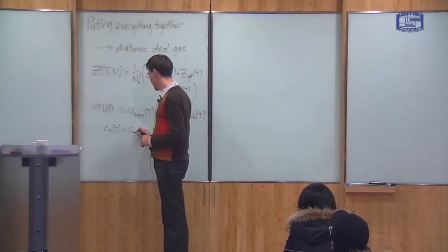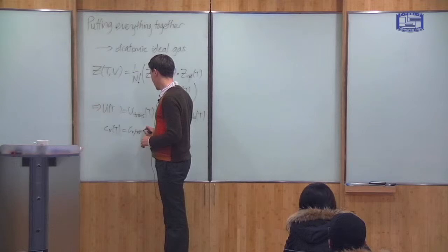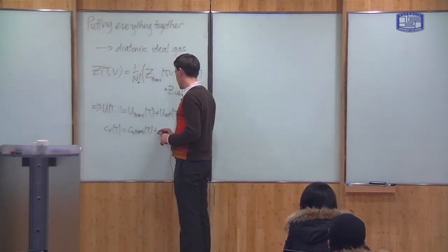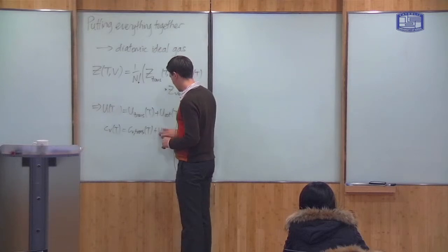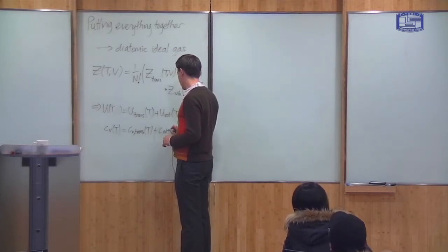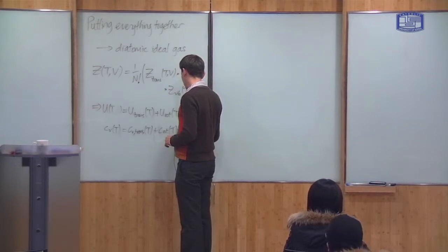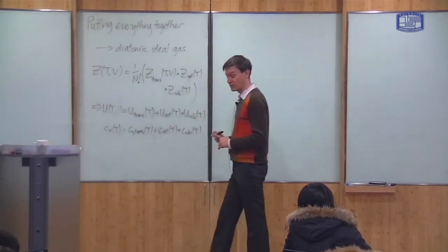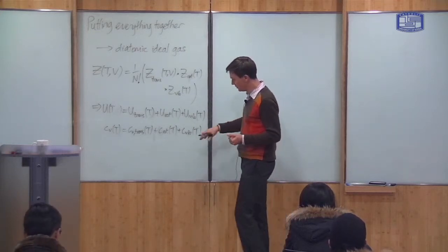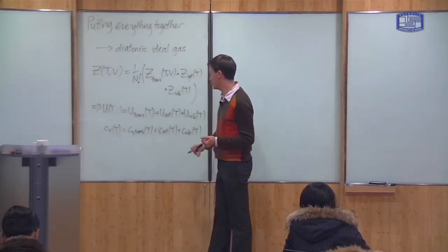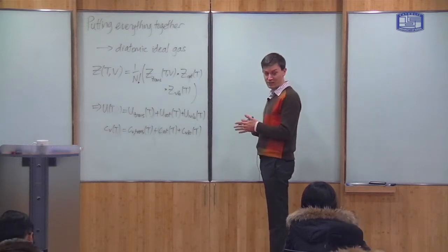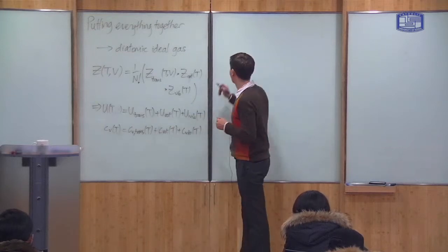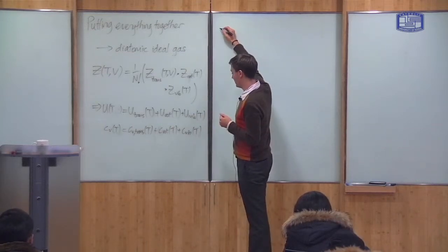Heat capacity is also a sum of the translational parts, the rotational parts, and the vibrational parts. We can see what the total heat capacity looks like by adding up all of the parts for each mode of energy.